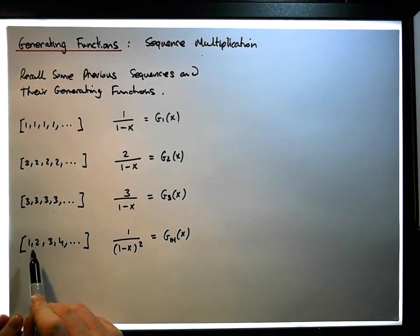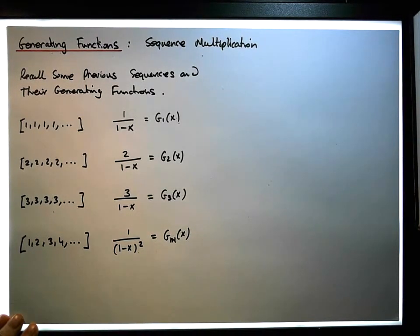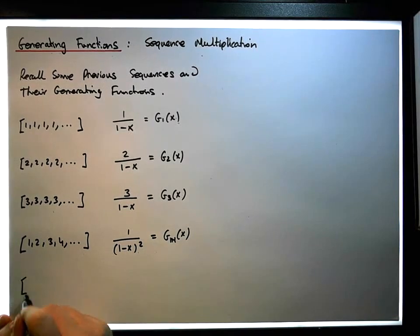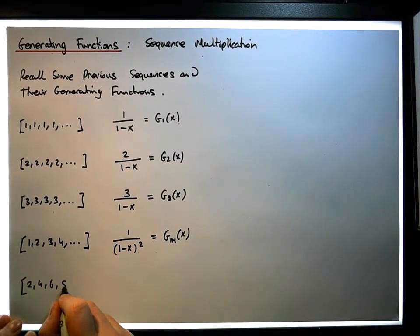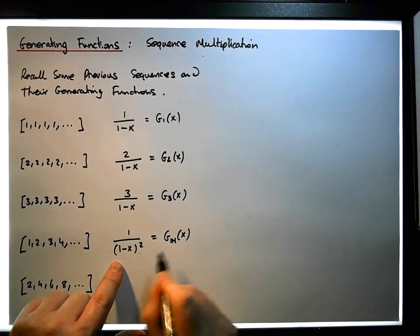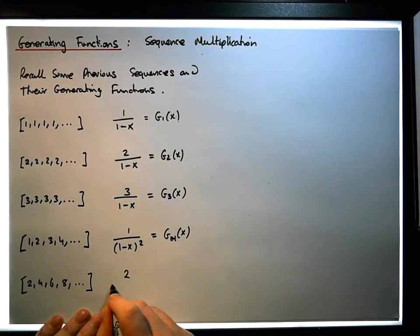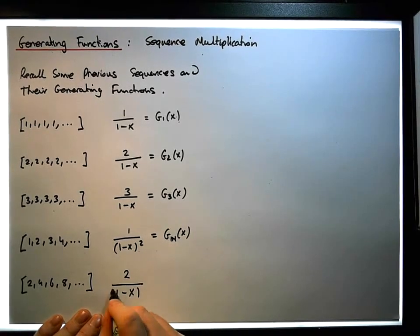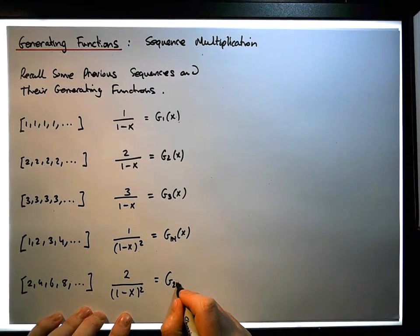We can see that if we multiply each term of the naturals by two, one becomes two, two becomes four, three becomes six, four becomes eight, and so on — we end up with the even integers, or even naturals: 2, 4, 6, 8, ... This is simply the natural numbers multiplied by two, so it's 2 times the generating function of the naturals, which gives us 2/(1 minus x)², the generating function of two times the naturals.